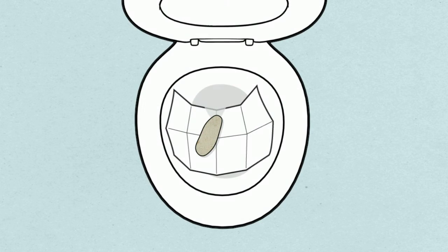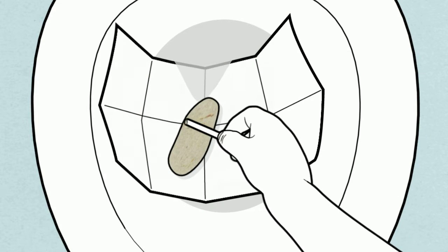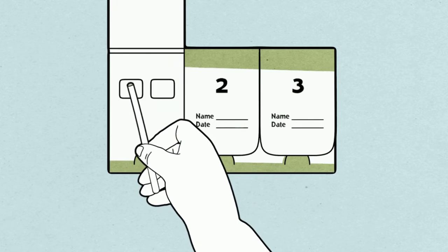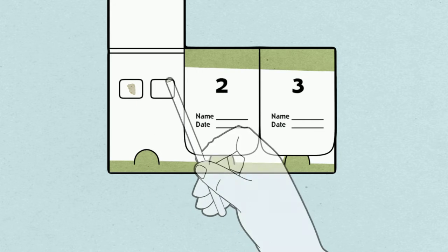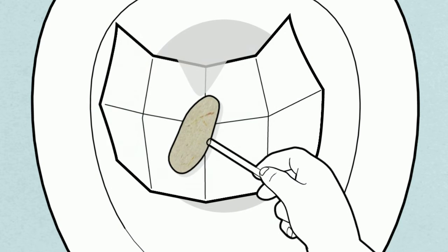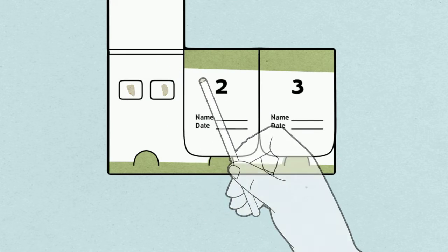Use the stick provided to collect a small sample from a part of the stool that has not contacted water. Apply the sample to the first window under the first flap of your card. Take a second sample from a different part of the same stool and apply it to the second window. Close the flap and then clean up.